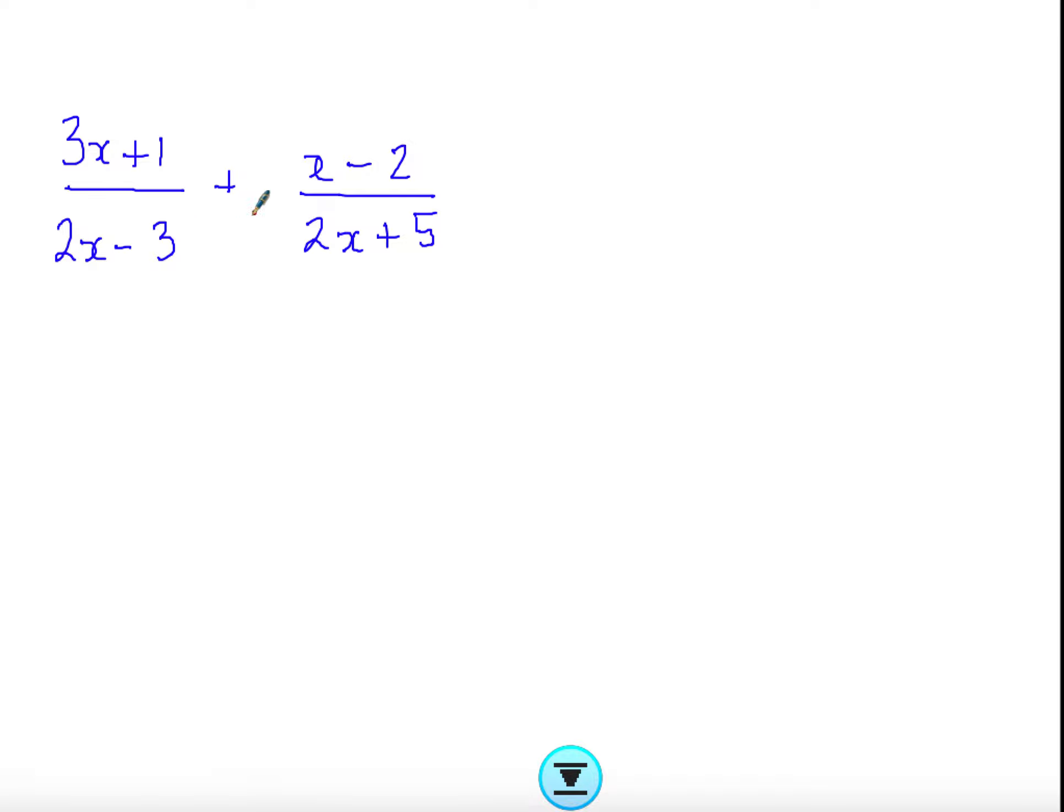I'll go on to the next example. These I can't simplify just yet. Things don't cancel out. I can't factorize or anything. I'm adding two fractions. Denominators are not the same. I can't change this to a plus 5, nor can I change this to a minus 3, which means I have to multiply them by each other.